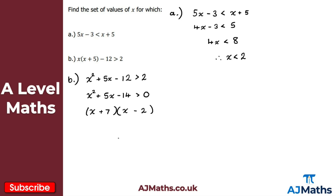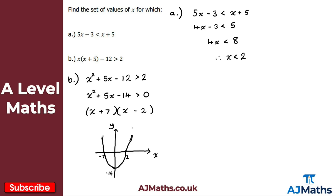Now I want to sketch this quadratic. We get a u-shaped curve with a y-axis and x-axis. It cuts through at x = -7 and x = +2, and it cuts through the y-axis at -14. Joining this up, we get our u-shaped quadratic sketch.